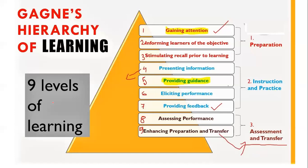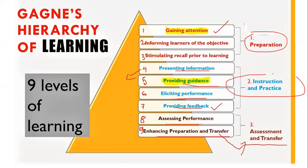Gagne's nine events of instruction: gaining attention, informing the learners of objectives, stimulating recall of prior learning, presenting information, providing guidance, eliciting performance, providing feedback, assessing performance, and enhancing retention and transfer. The first three fall under preparation, the next three under instruction, and the last two cover assessment and transfer.